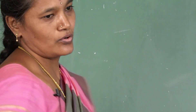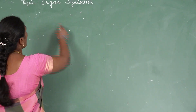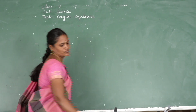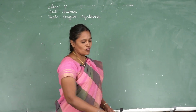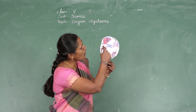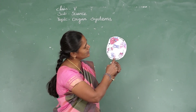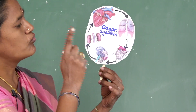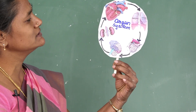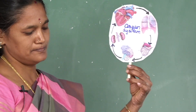Today we are going to learn about organ systems. A group of organs that work together as a biological system to perform one or more functions is called the organ system.